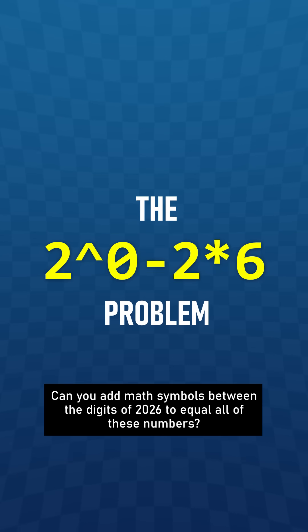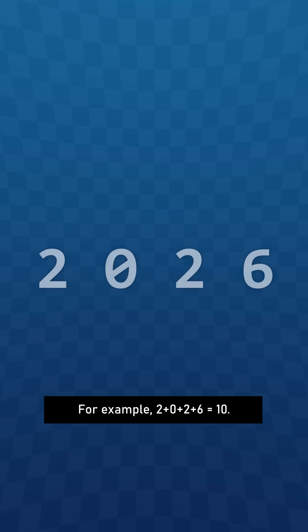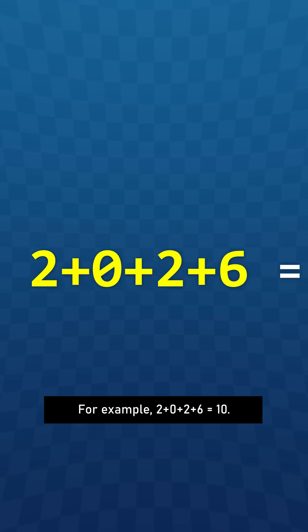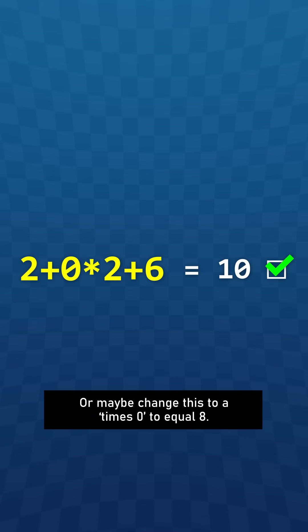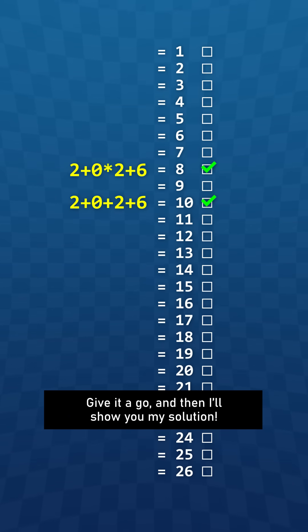Can you add math symbols between the digits of 2026 to equal all of these numbers? For example, 2 plus 0 plus 2 plus 6 equals 10. Or maybe change this to a times 0 to equal 8. Give it a go and then I'll show you my solution.